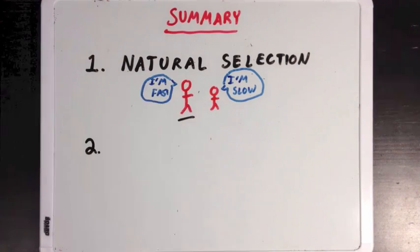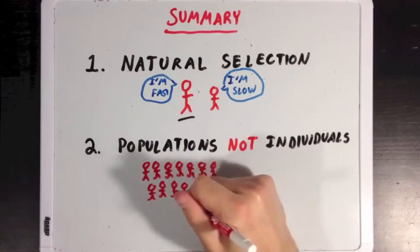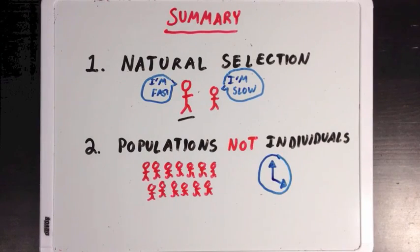Next, we learned that evolution, which is driven by natural selection, occurs to populations, not individuals, and occurs over a huge period of time.